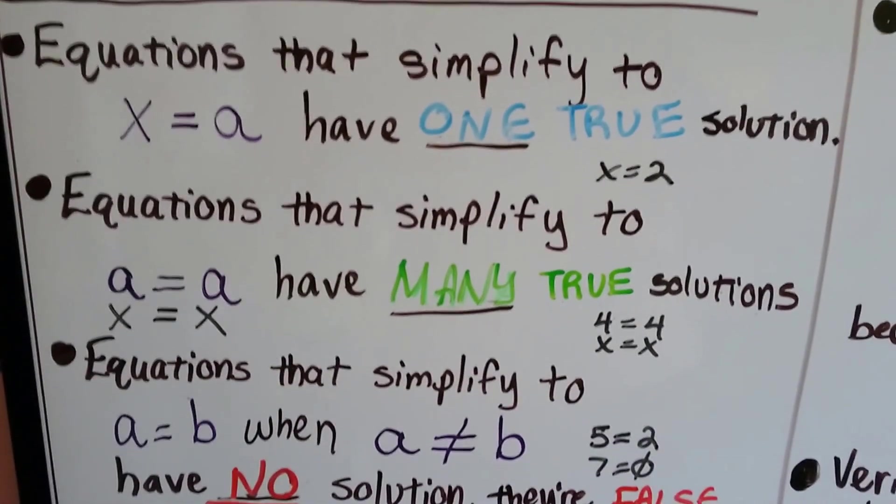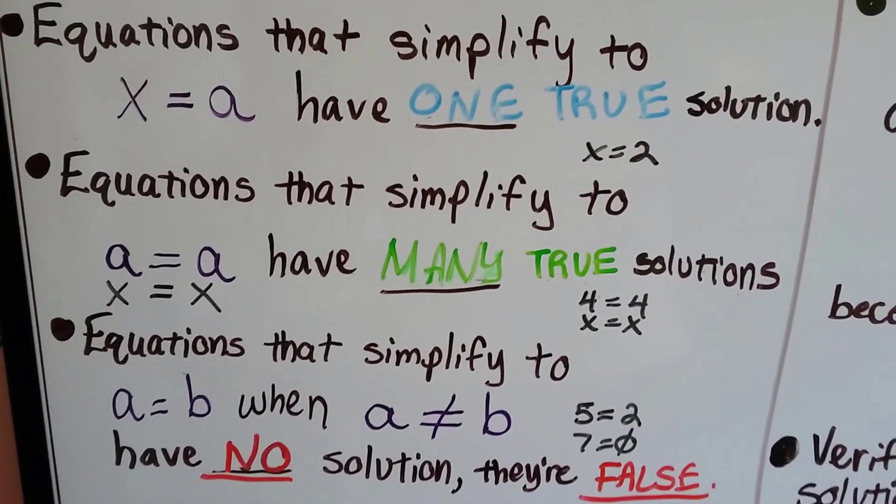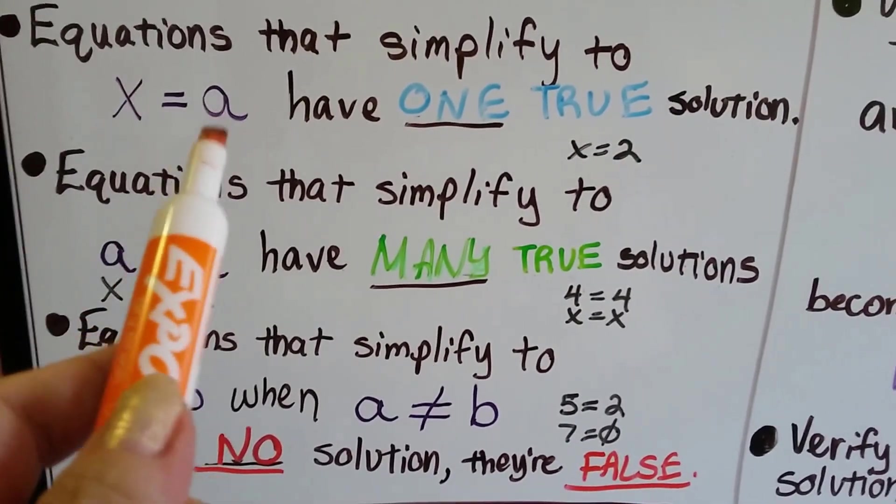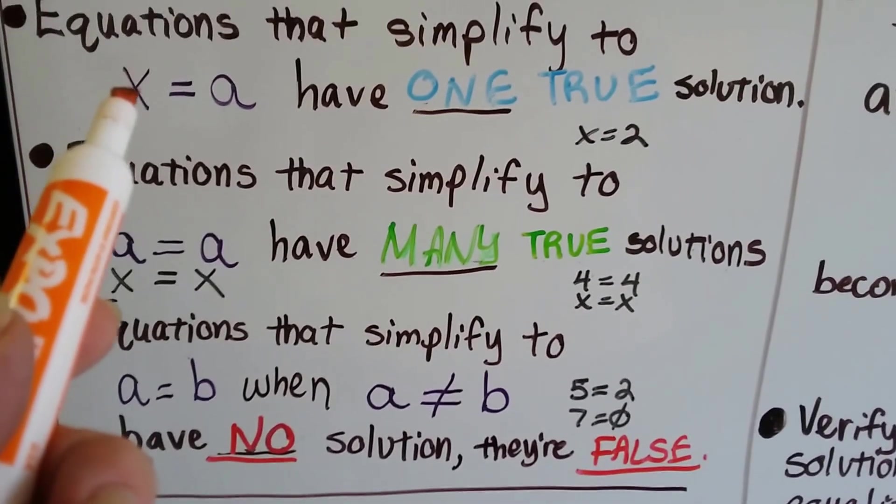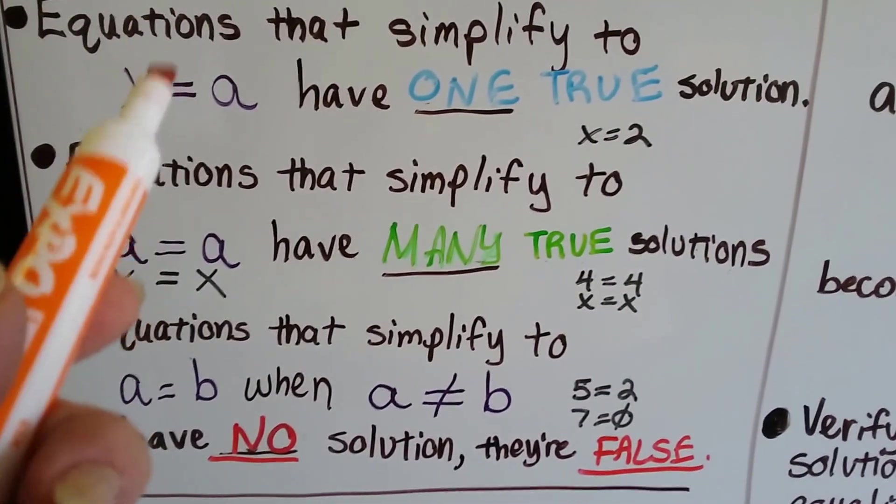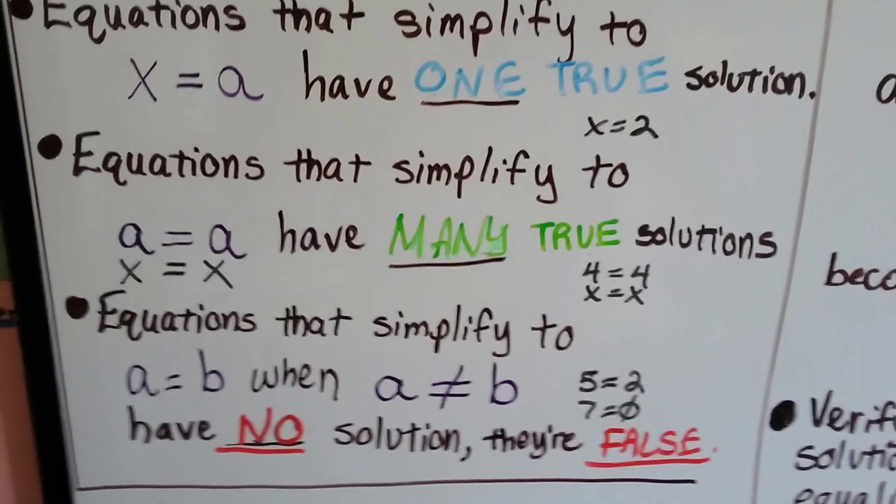Equations that simplify to x equals a, that would have one true solution. So that would be like x equals 2, or x equals 9, or x equals 23. It has a set particular in one number that it's equal to. So that's one true solution.